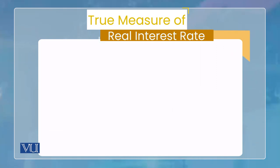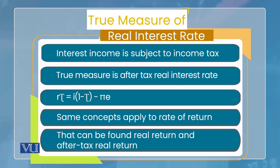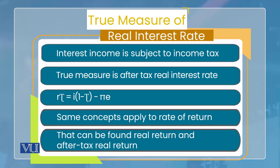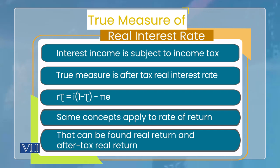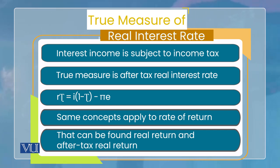Now if you want to truly measure interest rate on an investment, the first thing is: do not look at nominal interest rate — look at real. And even real should not be seen in isolation, because income tax is also deducted on interest payments. So the true measure of real interest rate comes after subtracting the tax rate as well. This is written as RT or R-tau — after-tax real interest rate — and it equals nominal interest rate multiplied by (1 − τ), where τ is the tax rate deducted on nominal payments, minus expected inflation rate. This gives the after-tax ex-ante real interest rate, which is the relevant interest rate you should consider before investment.